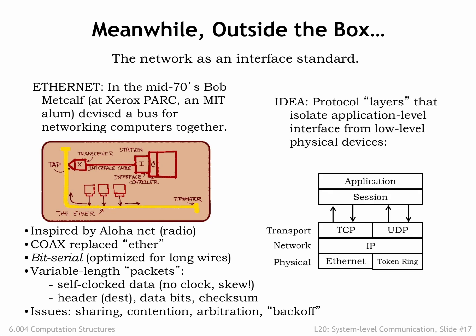The software controlling the network is divided into a stack of modules, each implementing a different communication abstraction. The lowest-level physical layer is responsible for transmitting and receiving an individual packet of bits. Bit errors are detected and corrected, and packets with uncorrectable errors are discarded.